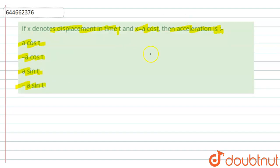So we are given the displacement x equals a cos t. And we know that the acceleration is given as... let me denote acceleration by capital A.